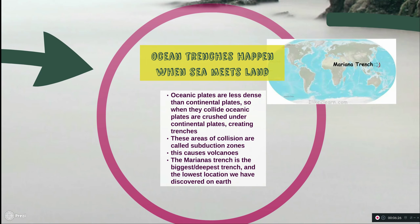Ocean trenches are another feature that can result from plate boundaries. When a continental plate collides with a smaller, lighter oceanic plate, the oceanic plate is pushed underneath the heavier continental plate. This interaction is called a subduction zone. Subduction zones often produce trenches — you may know of the Marianas Trench, which is the deepest and largest trench in the world and the lowest point on our planet.